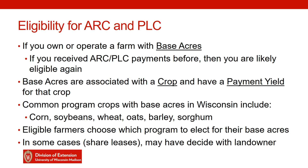For example, a farmer may own or operate an FSA farm, designated by the FSA with a farm serial number. That farm may have 160 actual acres, and on those 160 acres there might be 100 base acres of corn and 40 base acres of soybeans. The corn will have a payment yield of, say, 140 bushels per acre, and soybeans will have a payment yield of, say, 40 bushels per acre. That's how these programs work.